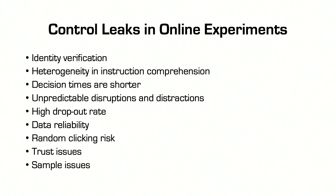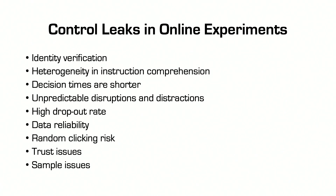Decision times are shorter. Generally, we observe that in a laboratory experiment it takes approximately seven seconds per decision. Online decisions are shorter — there is debate about by how much, but in my personal experience it takes about five seconds instead of seven when we do experiments online, at least in the experiments my group has done. That's another potential concern.